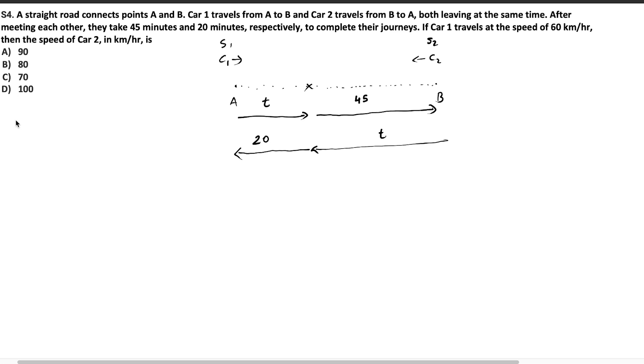So what I am going to do next is try to find out the value of T. Let's take the distance from A to X. We can see that car C1 will travel from A to X taking T minutes, as we have already assumed. And car C2 will take 20 minutes to travel this distance. So S1 will be equal to distance AX by T and S2 will be equal to AX by 20.